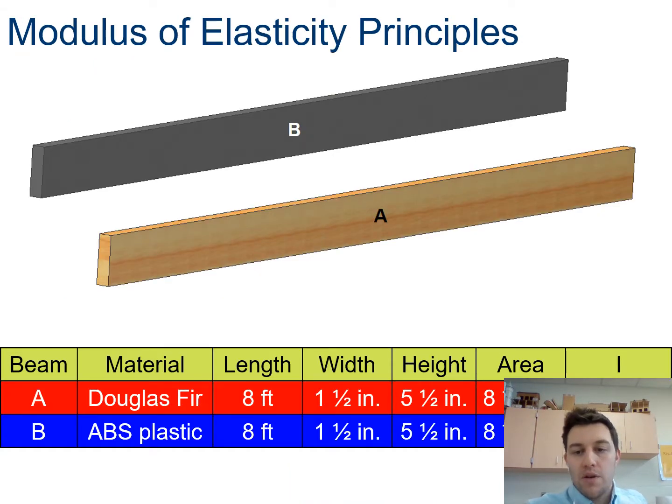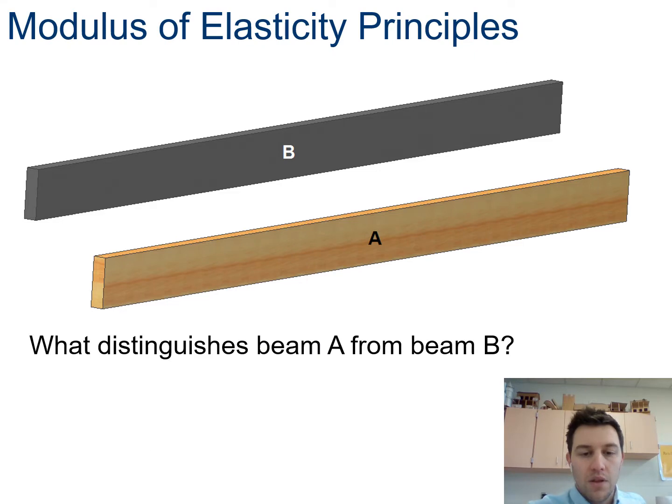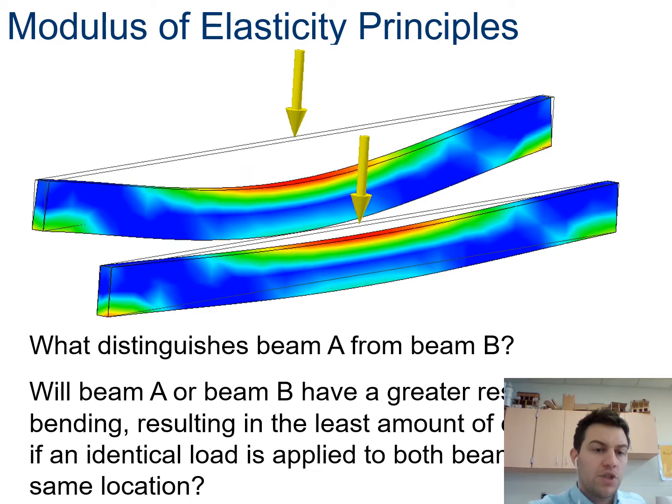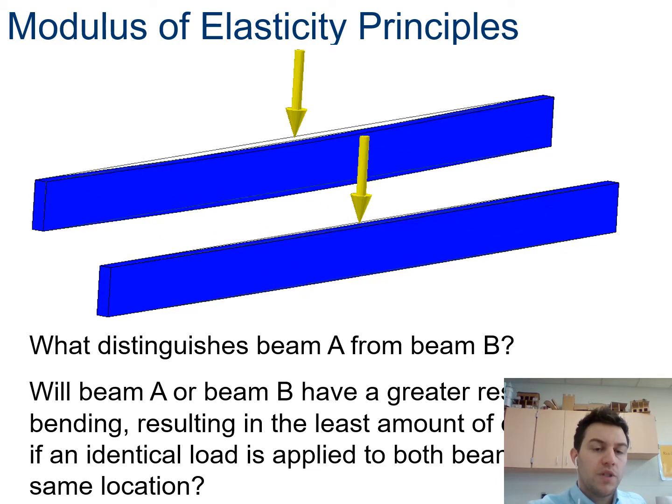So if we compare shapes here, we have the exact same size beam. It's again, a two by six, eight feet long, same areas, same moment of inertia because it's all the same shape. But now they are different materials. One is ABS plastic and one is still Douglas fir. The difference is material. And when I look, even though they're the exact same shape with the exact same moment of inertia, the plastic deflects more because it has a smaller modulus of elasticity.